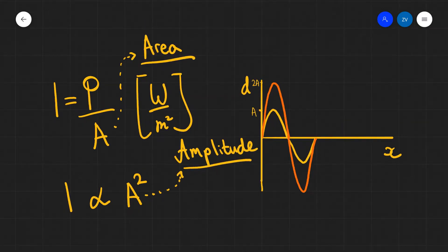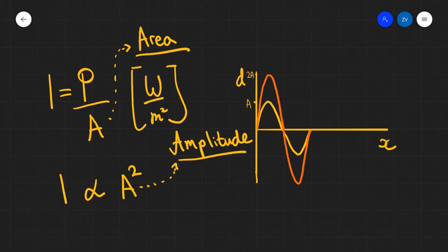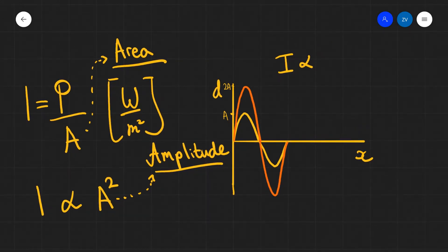Looking back at the intensity in our diagram, we can see that the orange wave has twice the amplitude. How does its intensity differ compared to the other wave? Well, if it has double the amplitude, and because intensity is proportional to the amplitude squared, the amplitude will no longer be just A — it will be 2A.